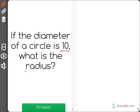If the diameter of a circle is 10, what is the radius? I'm going to draw a circle to help show this.